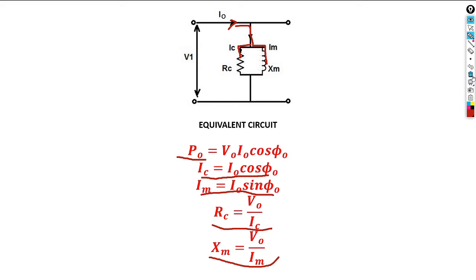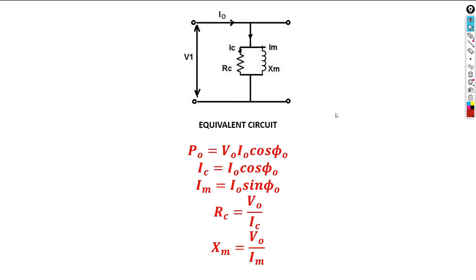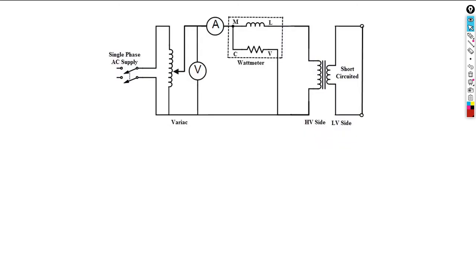Know that the open circuit test determines the core losses, iron losses, and stray losses. That is what happens under no-load. The key concept is that with an open circuit, this is the equivalent circuit and this is how we perform our calculations. The short circuit test will also help us determine some losses.